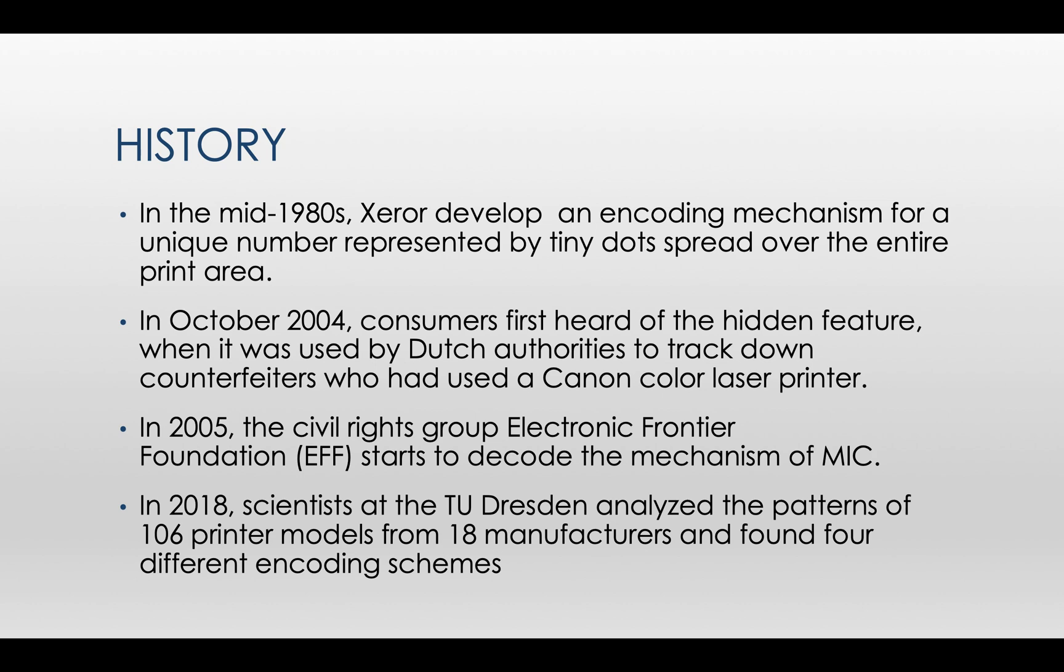In 2005, the civil rights group Electronic Frontier Foundation started to decode the mechanism of machine identification code. In 2018, scientists claimed that they had found four different encoding schemes from 18 different manufacturers.